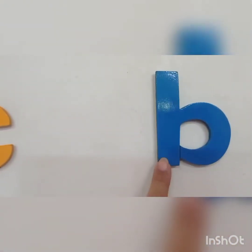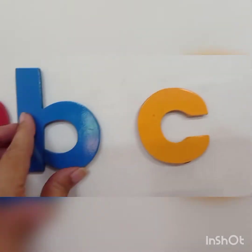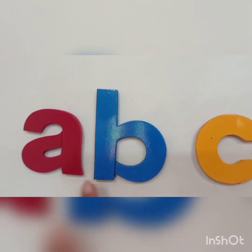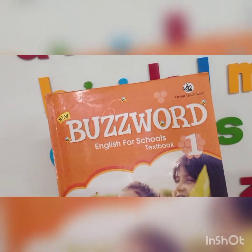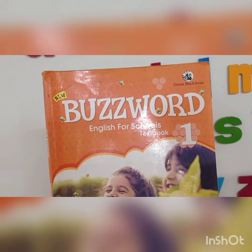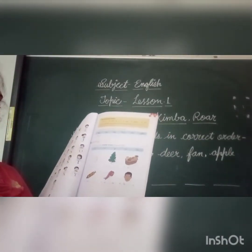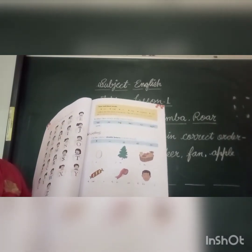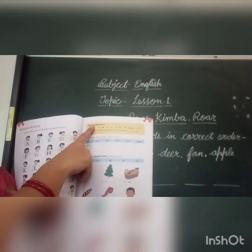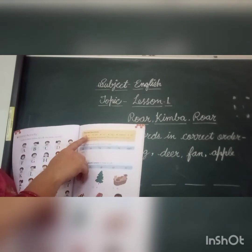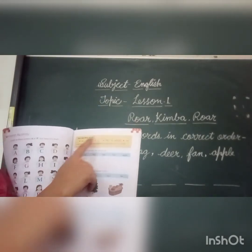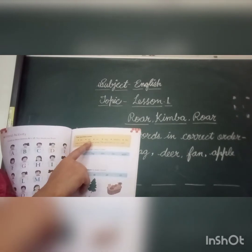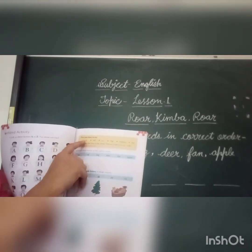So we have to start from A. A comes first, and after A comes B, and then C. So our correct alphabetical order is A, B, C. Clear? Buzzword English for Schools — in this book, page number 31. Here is our exercise. Now, read these words. Ant, bomb, cat, dog, alphabet, fox. These words are arranged in correct alphabetical order. You check the first letter of each word.